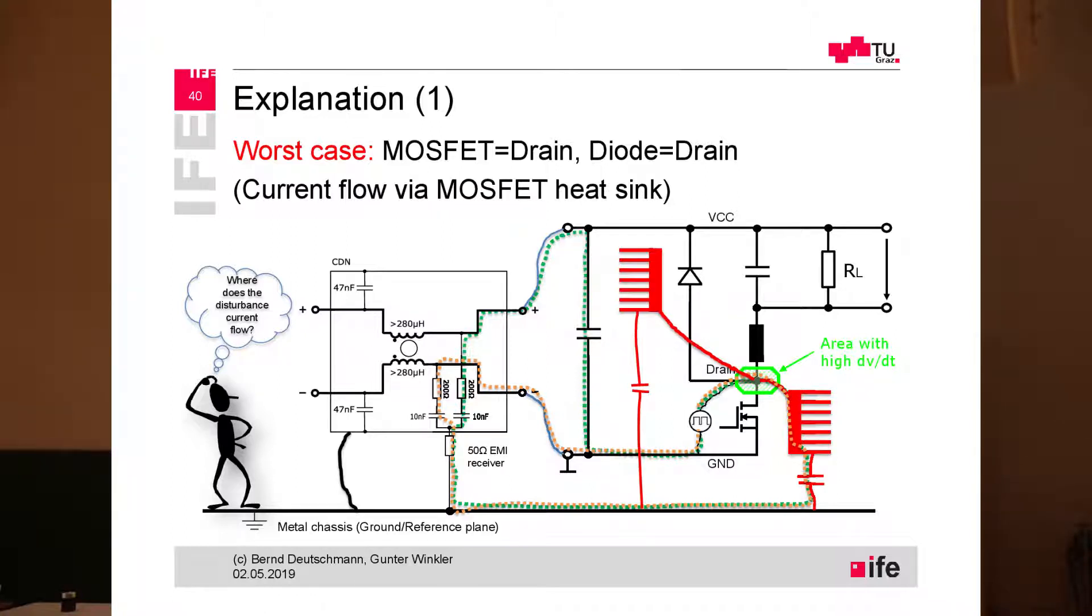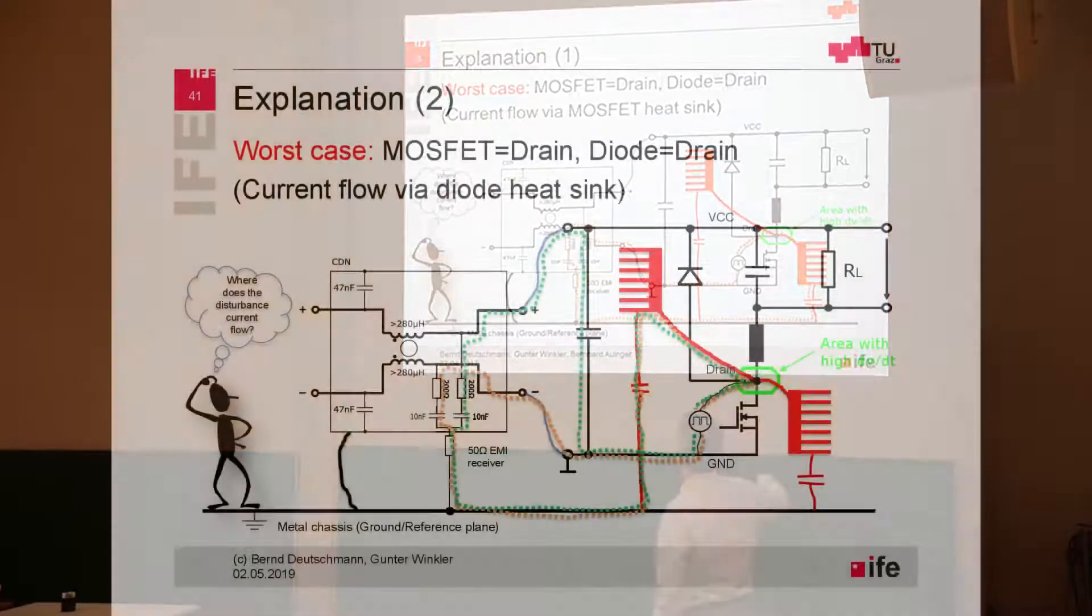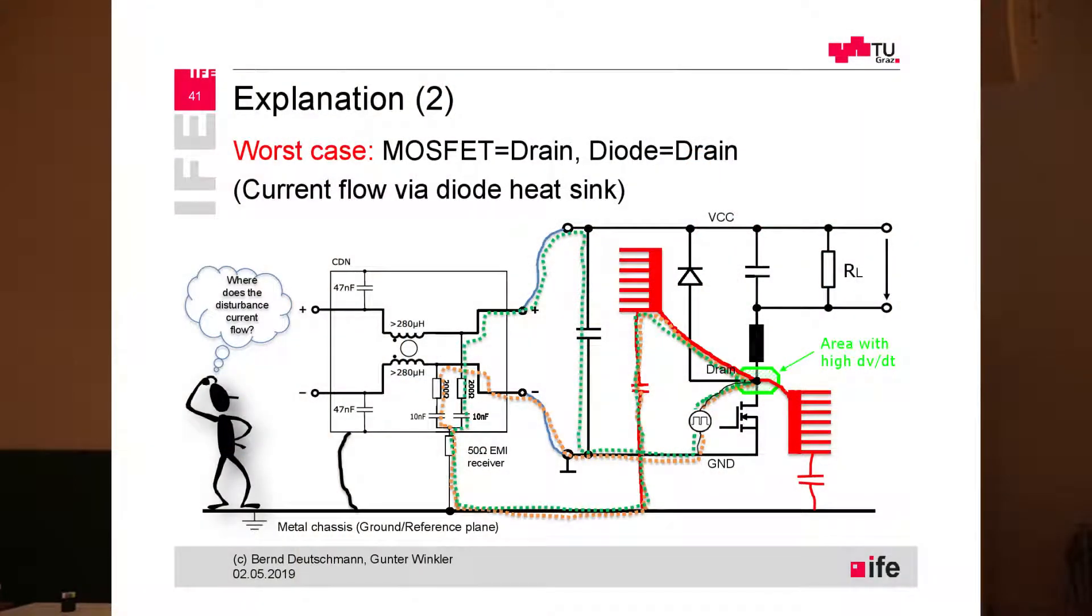This is the worst-case scenario for electromagnetic emission because this is the area that is jumping up and down when the switch is turning on and off. We are generating common-mode currents, or in this case, more or less differential-mode current over the 50-ohm resistance of the EMI receiver and also in this direction.